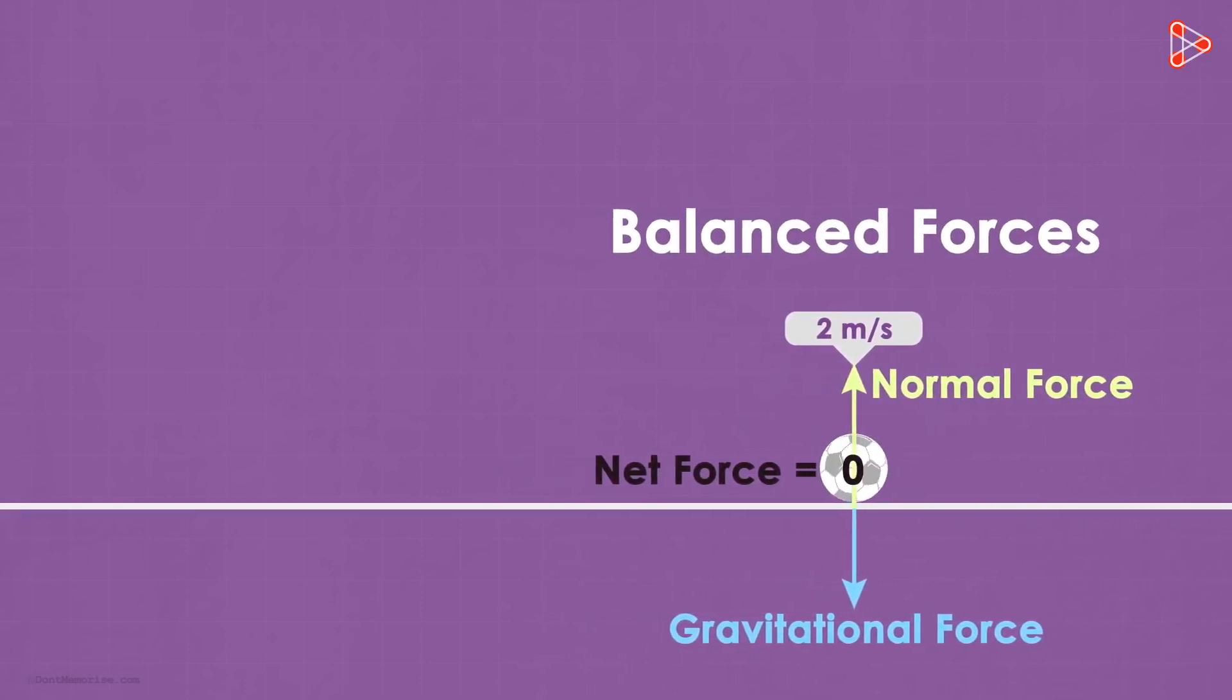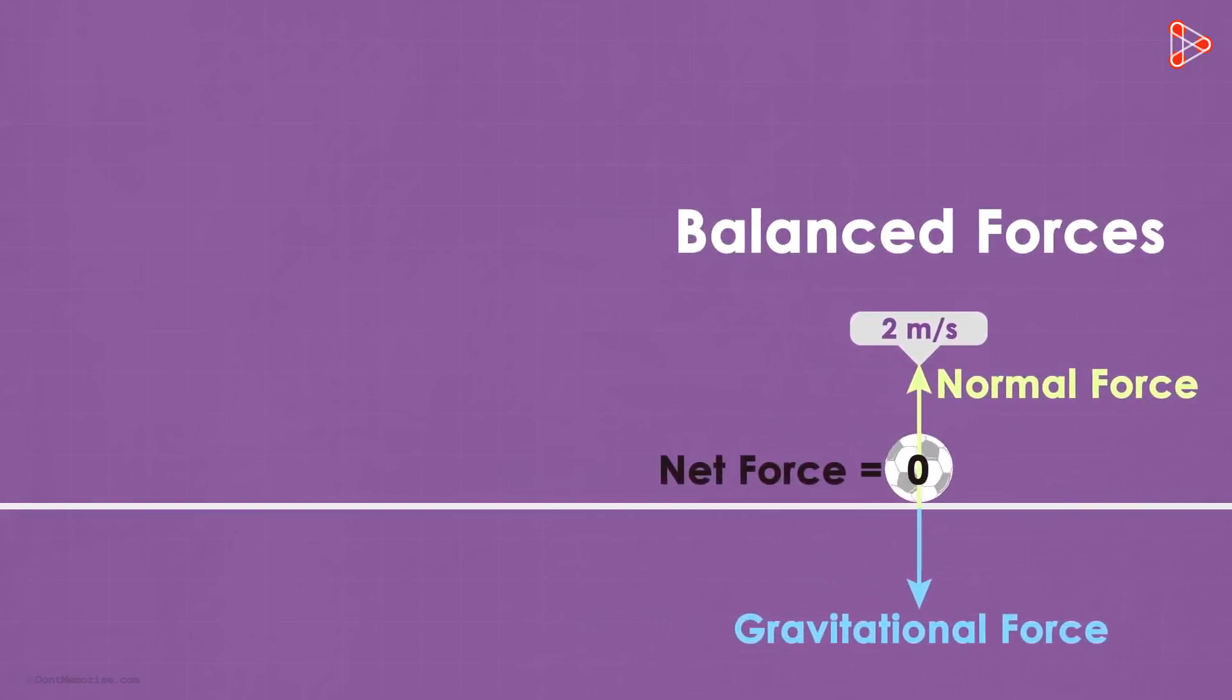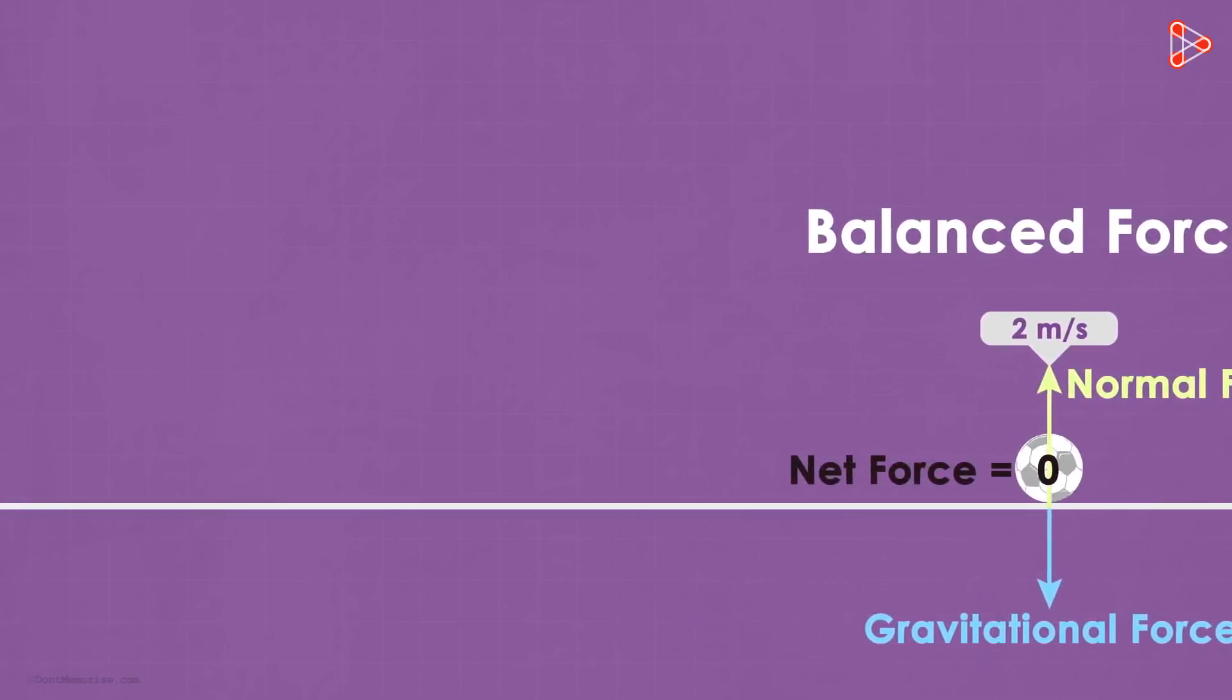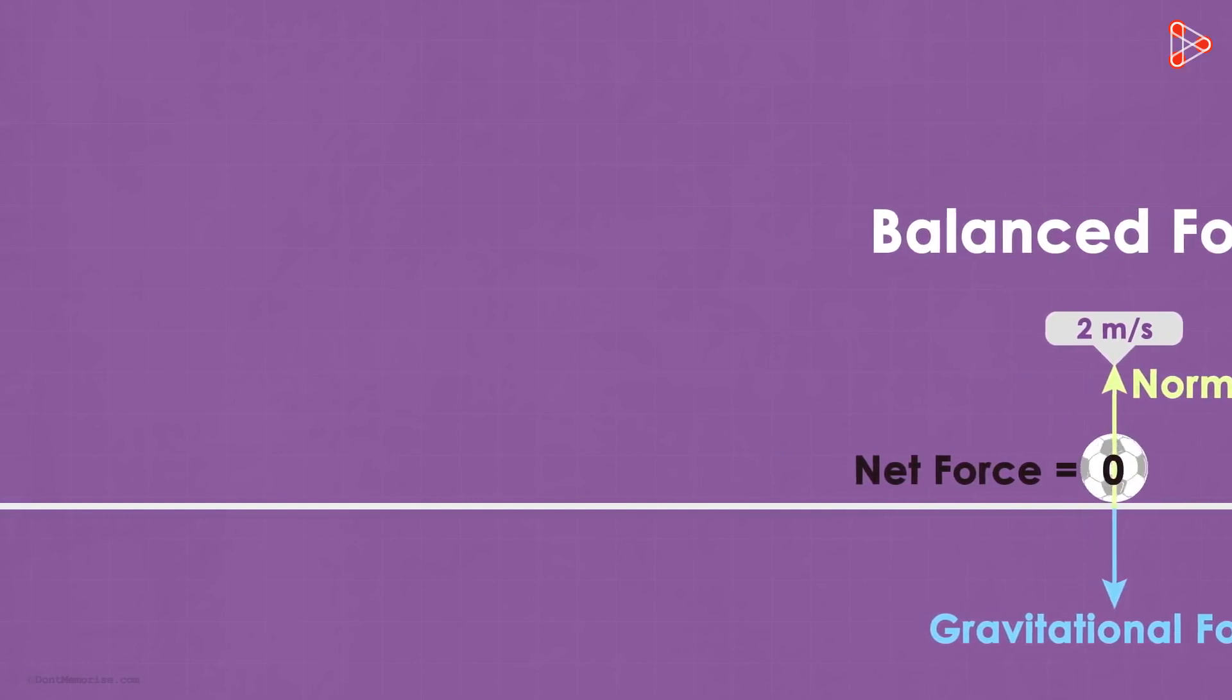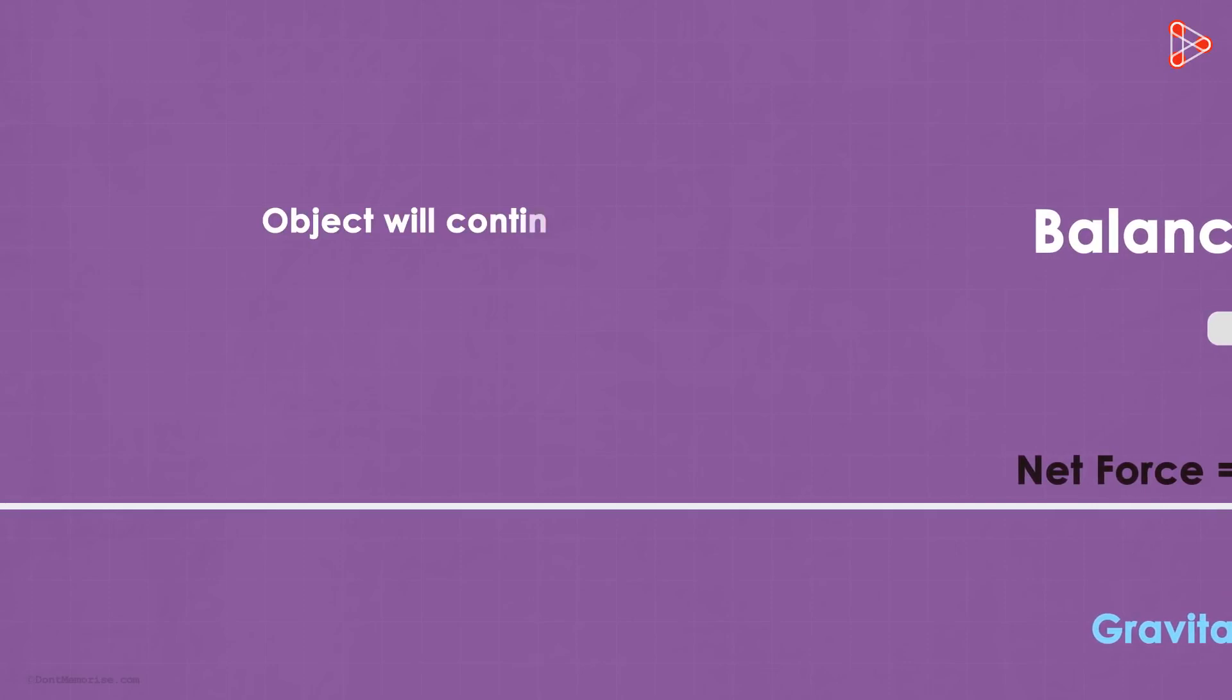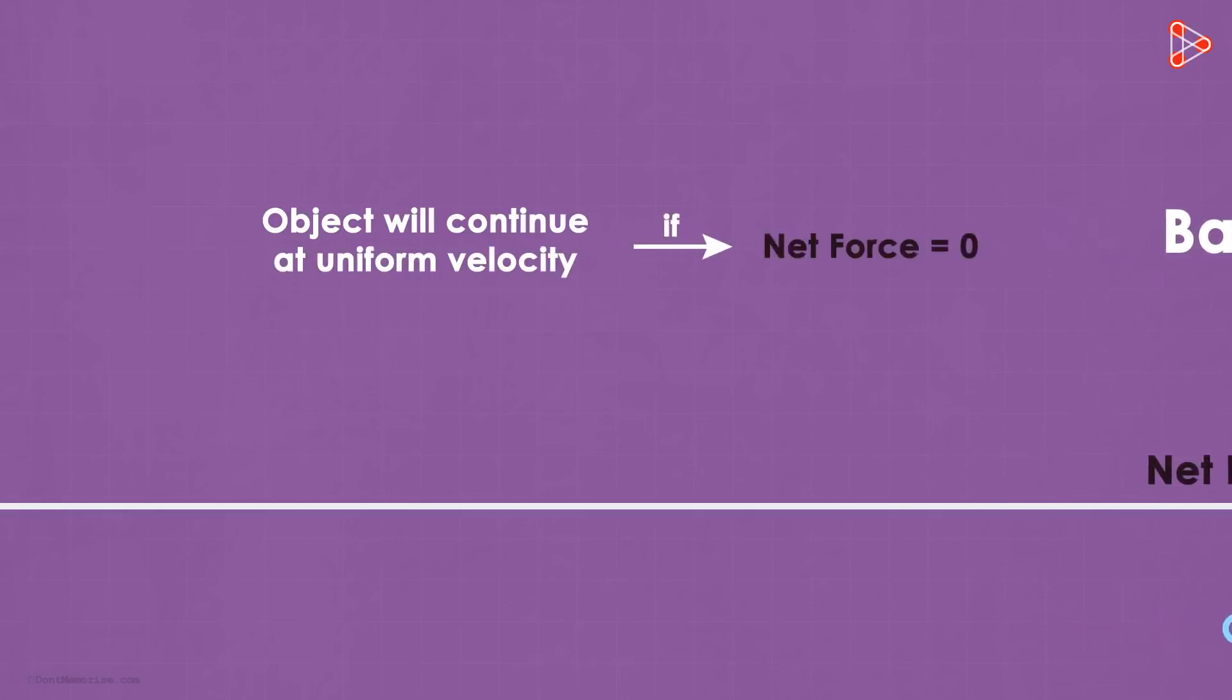Here as the forces are balanced, the ball will continue to move at 2 meters per second. Most people assume that if the object is moving, then there is some net force acting on it, but that's not true. An object will continue to move at uniform velocity even if the net force on it is zero.